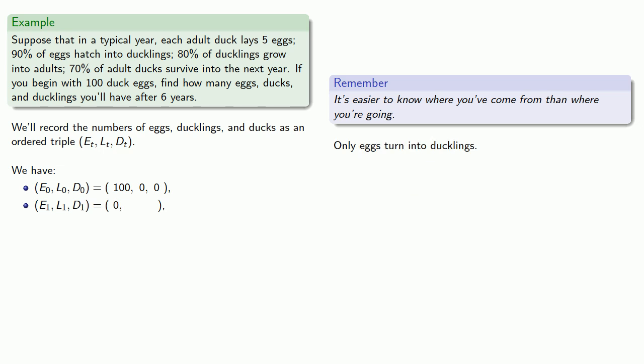Next, only eggs turn into ducklings. Now we're assuming 90% of the eggs hatch into ducklings. Since there are 100 eggs at t equals zero, then the number of ducklings is going to be 90% of 100, that's 90. And so the number of ducklings at time one is going to be 90, and we'll record that as the second component of our ordered triple.